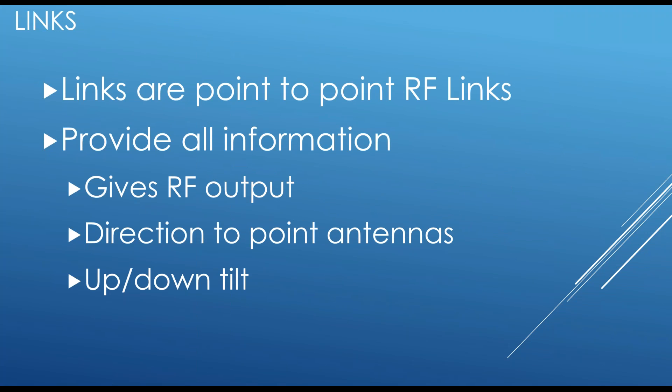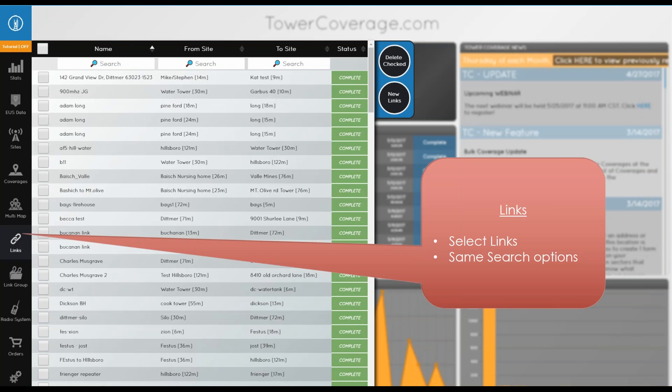Next we have links. Links are point-to-point RF links. Because they are point-to-point, we provide all RF output information and antenna gains but do not include antenna patterns — since we assume it's a properly aligned point-to-point link, there's no antenna pattern that should make a difference. To create a link, click the Links button, then you can select a link, delete checked links, or click New Link.